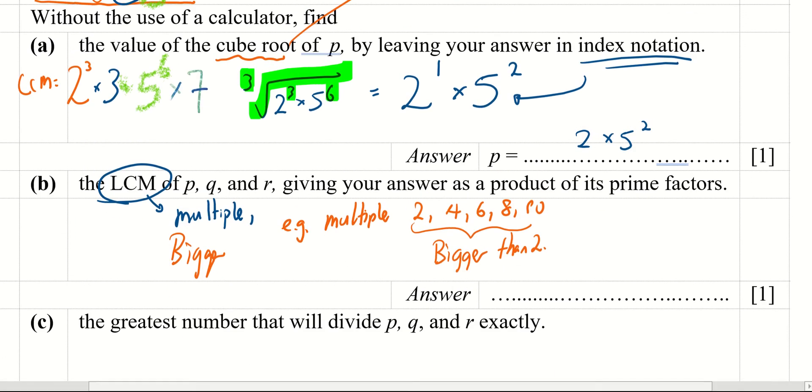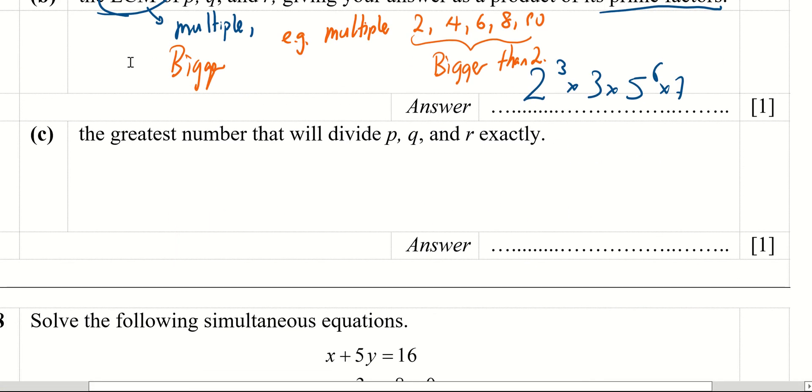Giving your answer as a product of the prime factors. So the answer is 2 to the power of 3 times 3 times 5 to the power of 6 times 7.